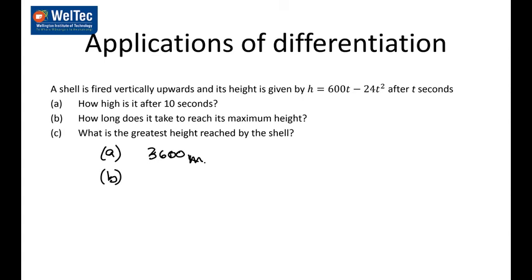The time it takes to reach the maximum height: the maximum height is when velocity equals zero, so we find the velocity function. The velocity function is 600 minus 48t, and that's going to be zero when t is 12.5. Then to find the greatest height, substitute t equals 12.5 into the original — the height is 3,750.